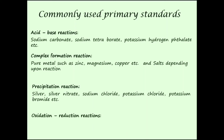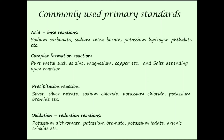Next, oxidation-reduction reactions — the titrimetric analysis based on these is oxidation-reduction titration, or simply redox titration. The compounds generally used as primary standards are potassium dichromate, potassium bromide, potassium iodate, arsenic trioxide, etc.